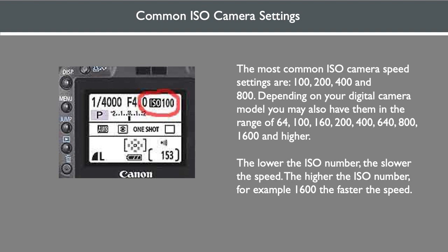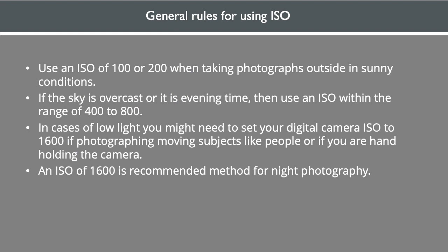Some general rules for using ISO: use 100 or 200 when taking photographs outside in sunny conditions. If the sky is overcast or it's evening, use an ISO within the range of 400 to 800. In cases of low light, you might need to set your digital camera ISO to 1600, especially if photographing moving subjects like people, or if you're hand-holding the camera. This may result in more grain or noise in your image. ISO 1600 is recommended for landscape, night shots, and night photography.